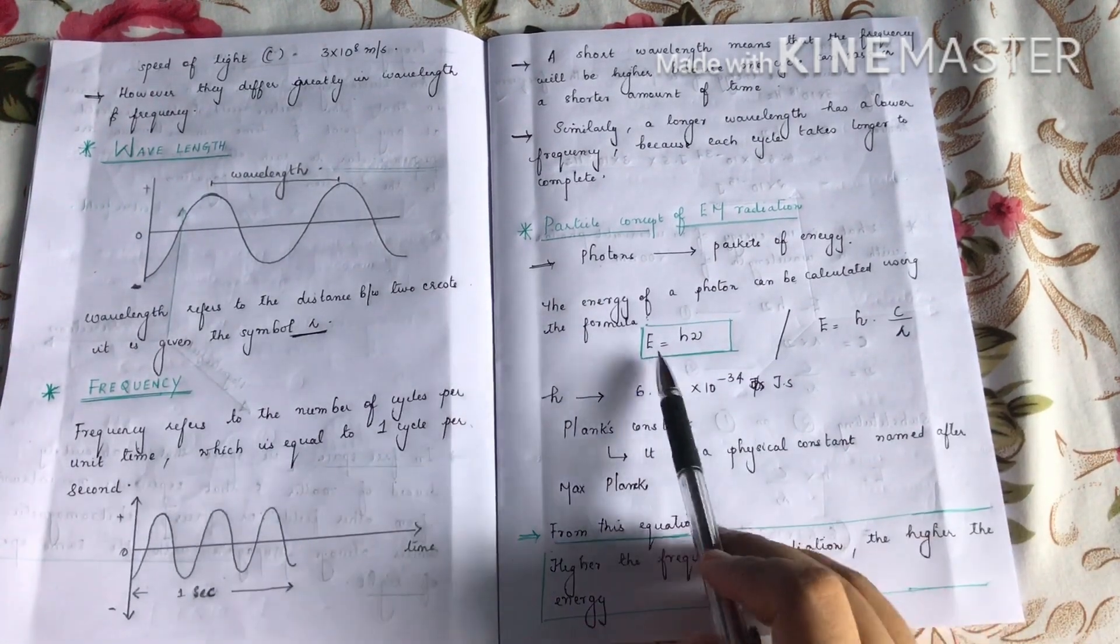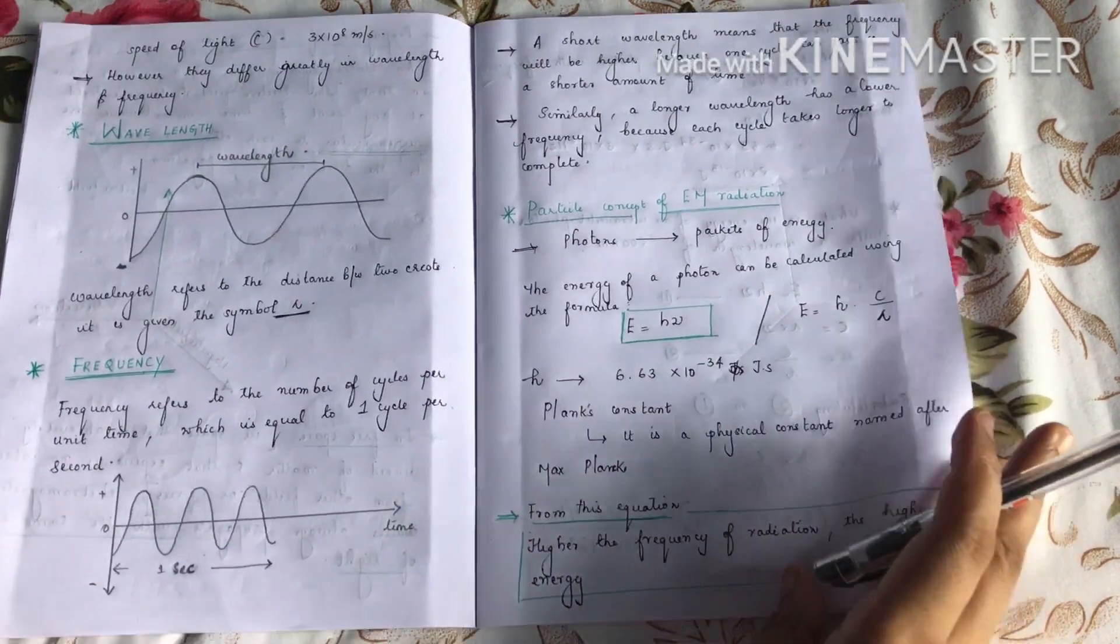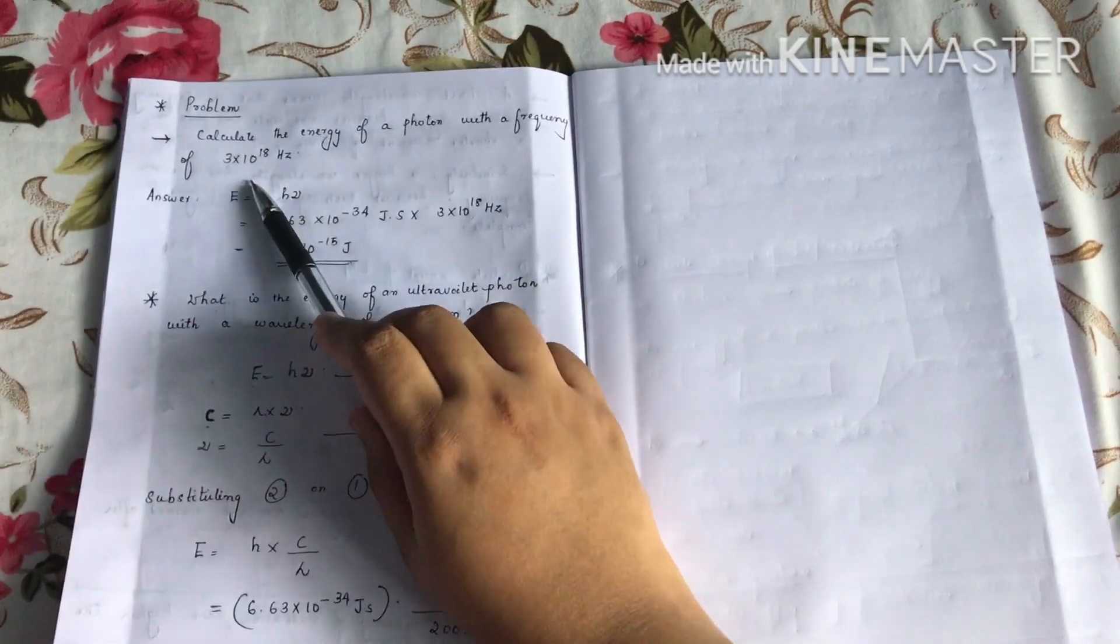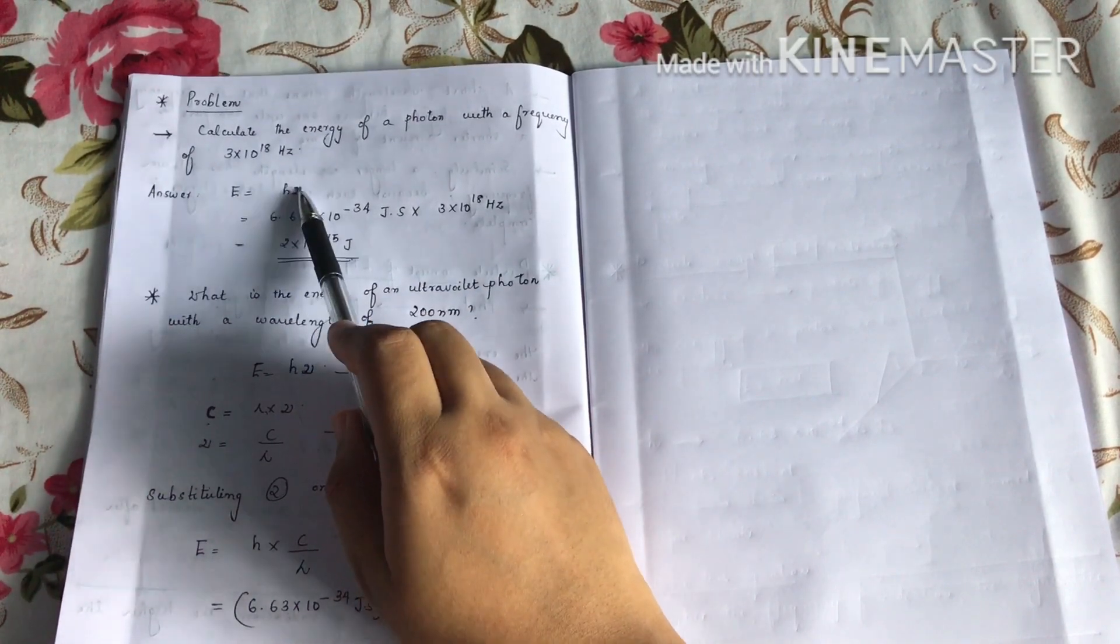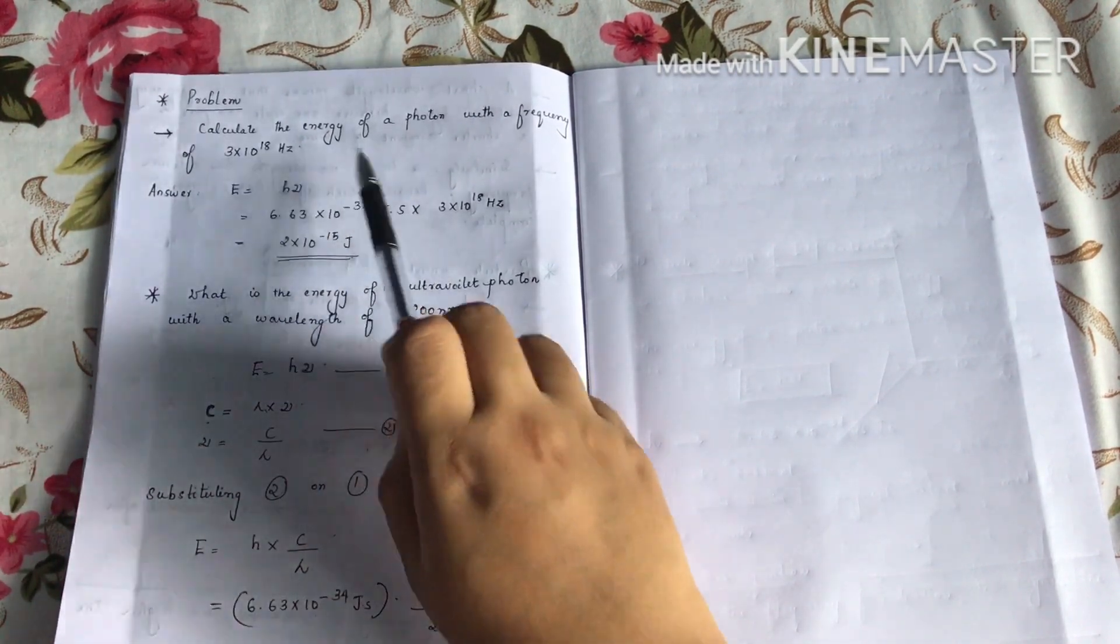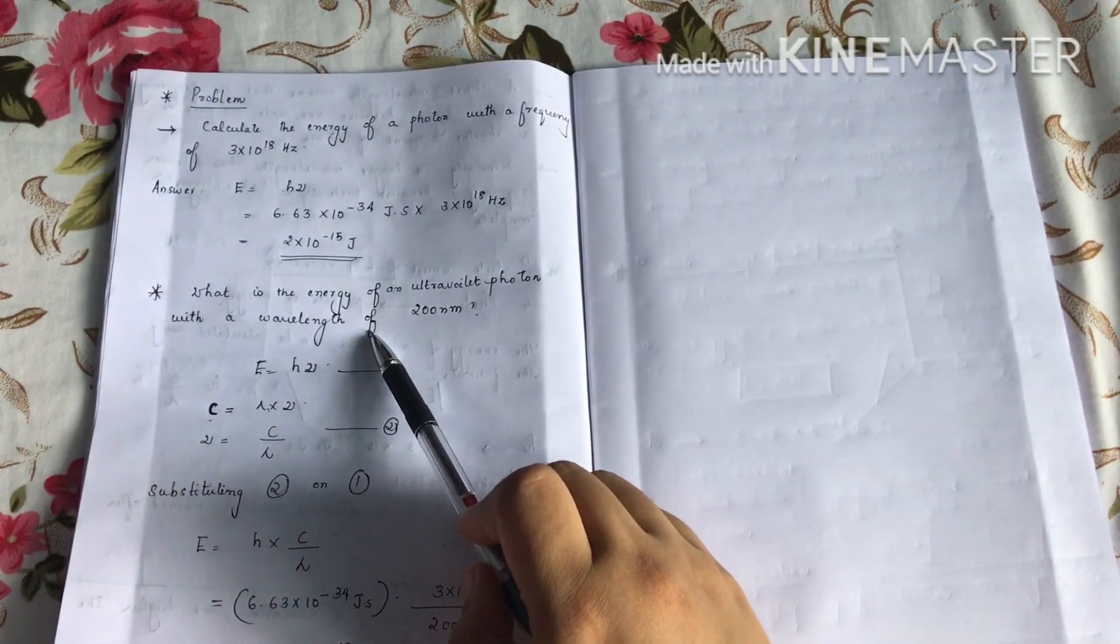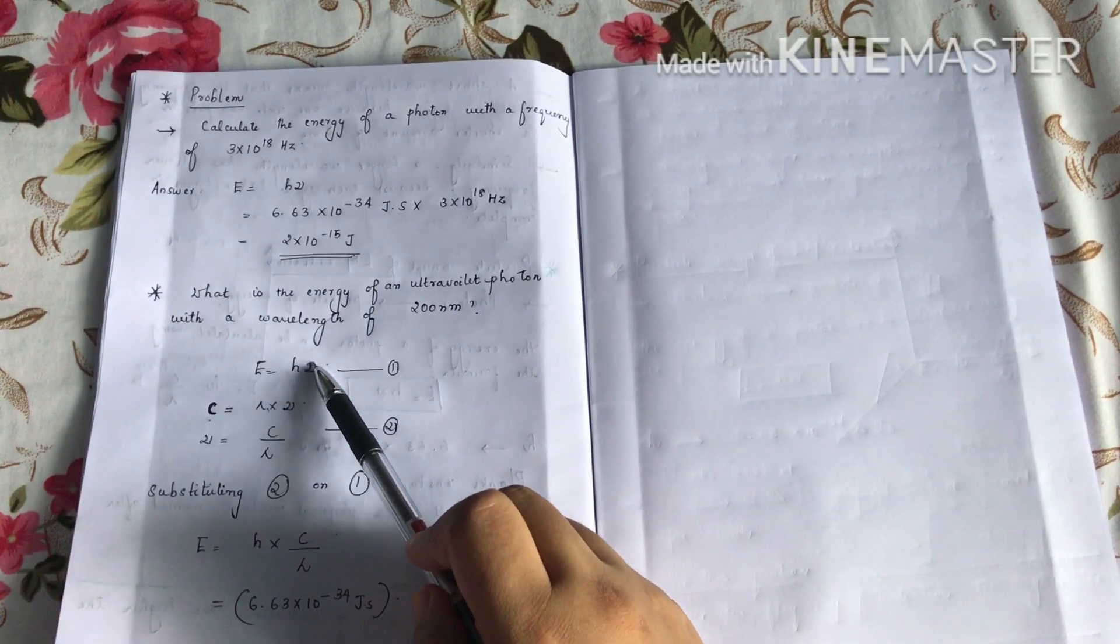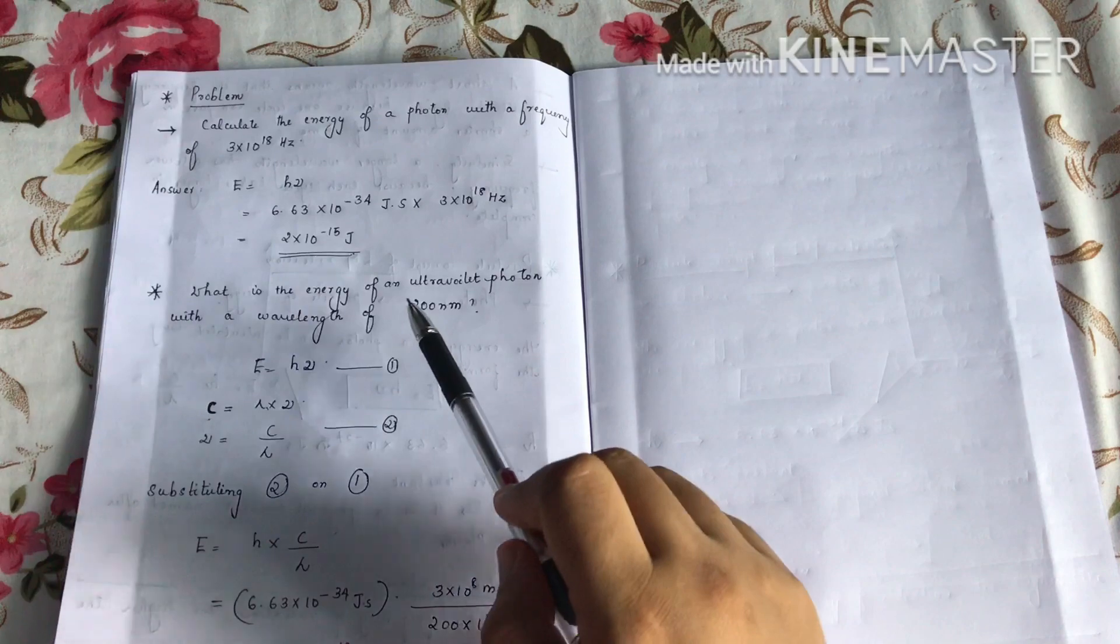Now let's solve a problem. Calculate the energy of a photon with a frequency of 3 times 10 raised to 18 hertz. Energy equals h times nu. H is Planck's constant and nu is the frequency. We can calculate using this equation.